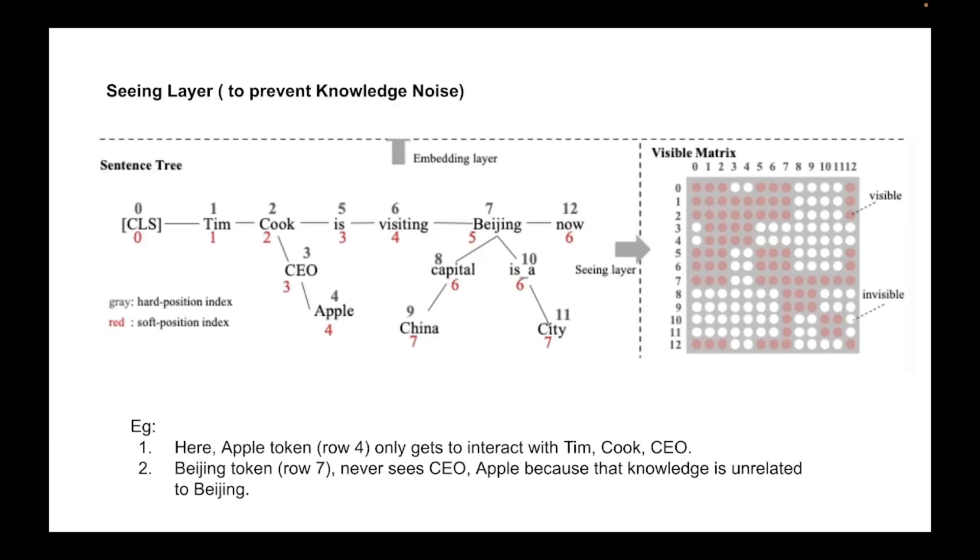And this is how within the transformer model, the Apple token never gets to directly interact with let's say the China token, because there is no visibility of these two tokens defined in the matrix.